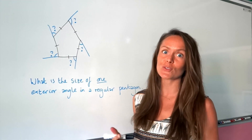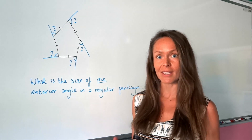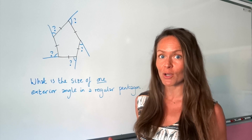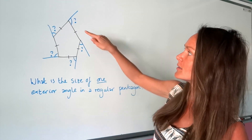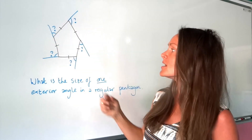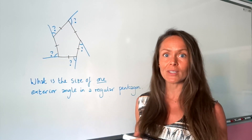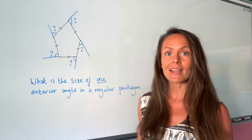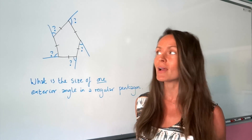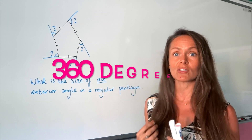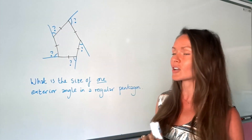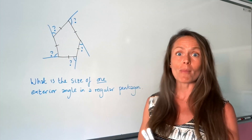Hey guys, in this video I'm going to talk to you about exterior angles in polygons. Remember, polygon is just a fancy word for shape, and exterior angles are these angles here, outside of the shape. Something really important you need to remember is all of the exterior angles in absolutely any shape always add up to 360 degrees, no matter what the shape.